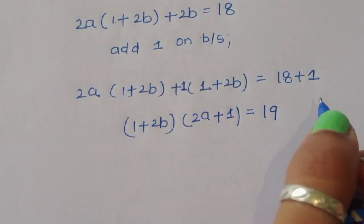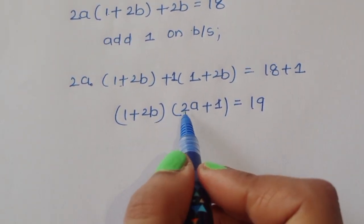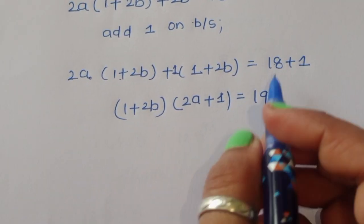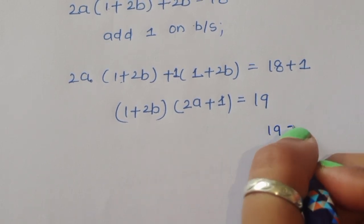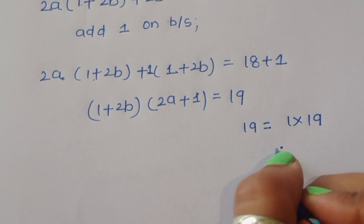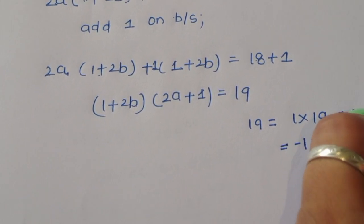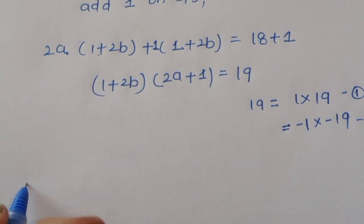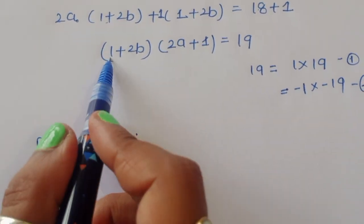We now have the equation (1 plus 2b) times (2a plus 1) is equal to 19. We need to find the factors of 19. The factors are: 19 equals 1 times 19, or minus 1 times minus 19. These give us two cases — Case 1 and Case 2.